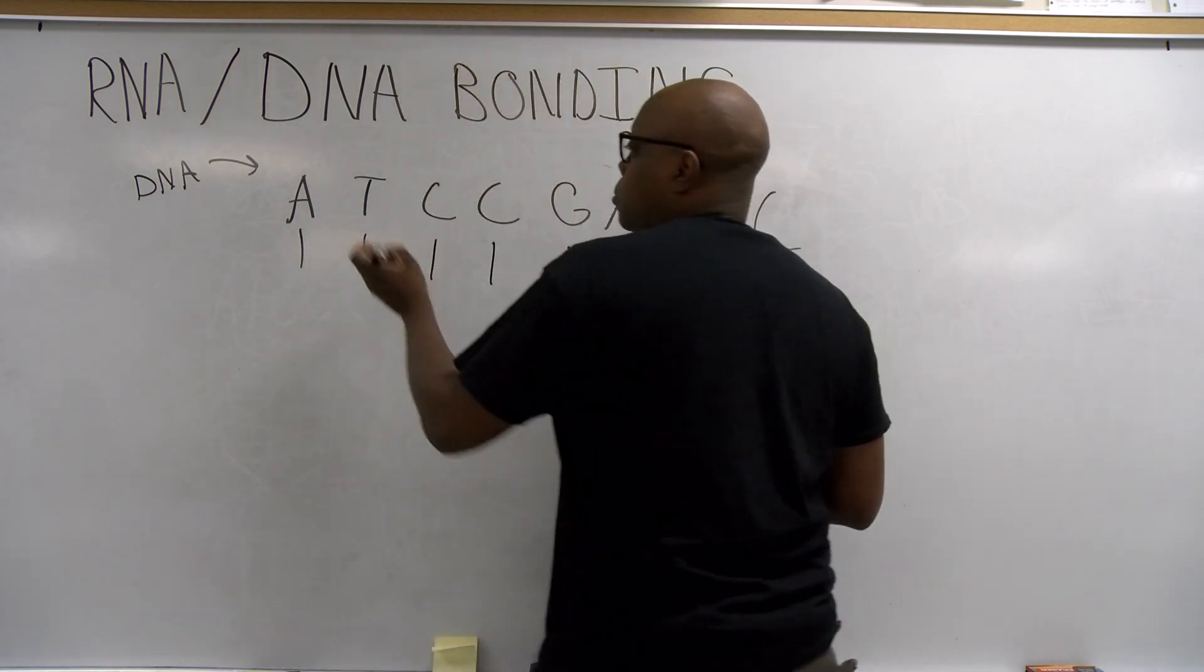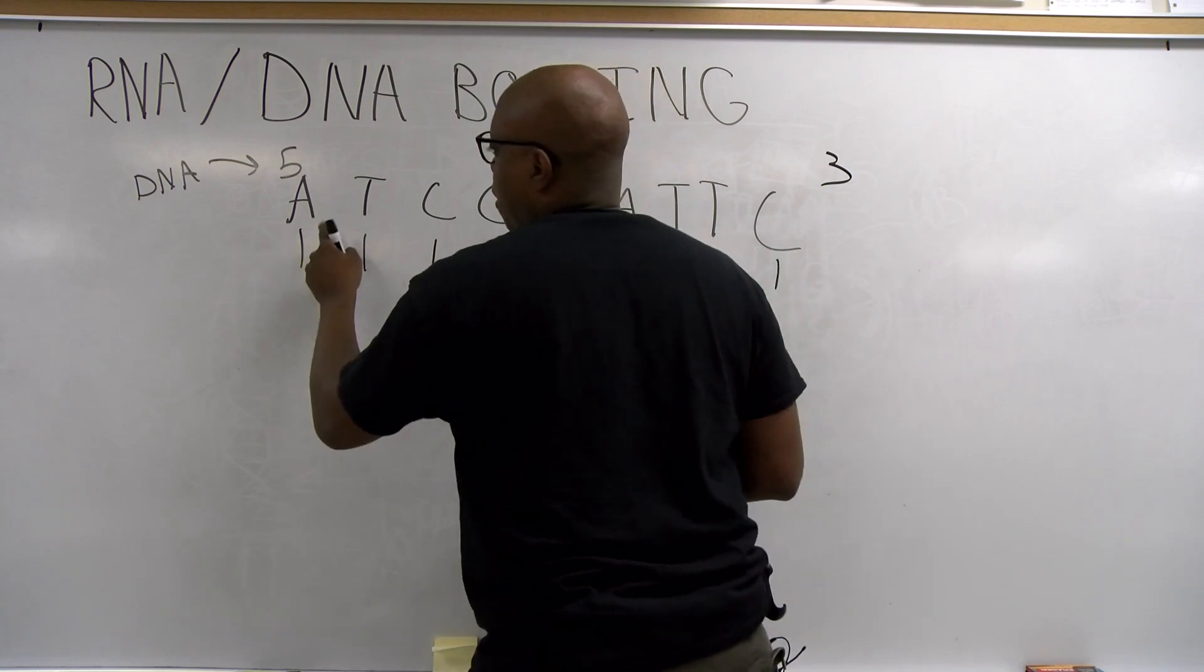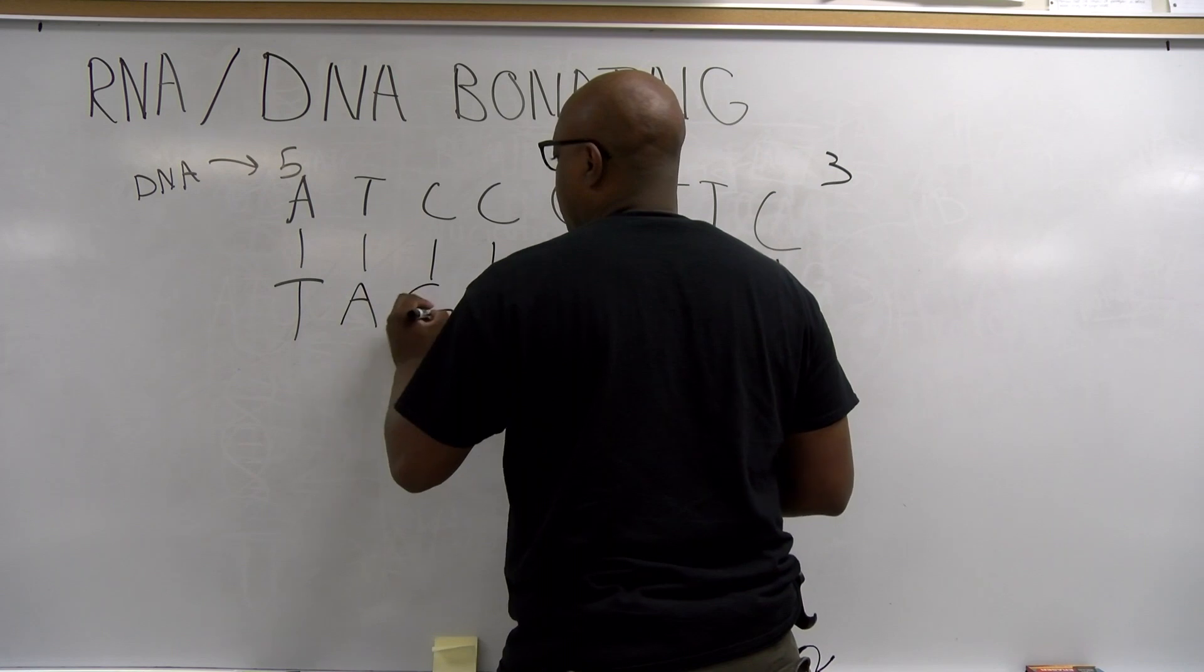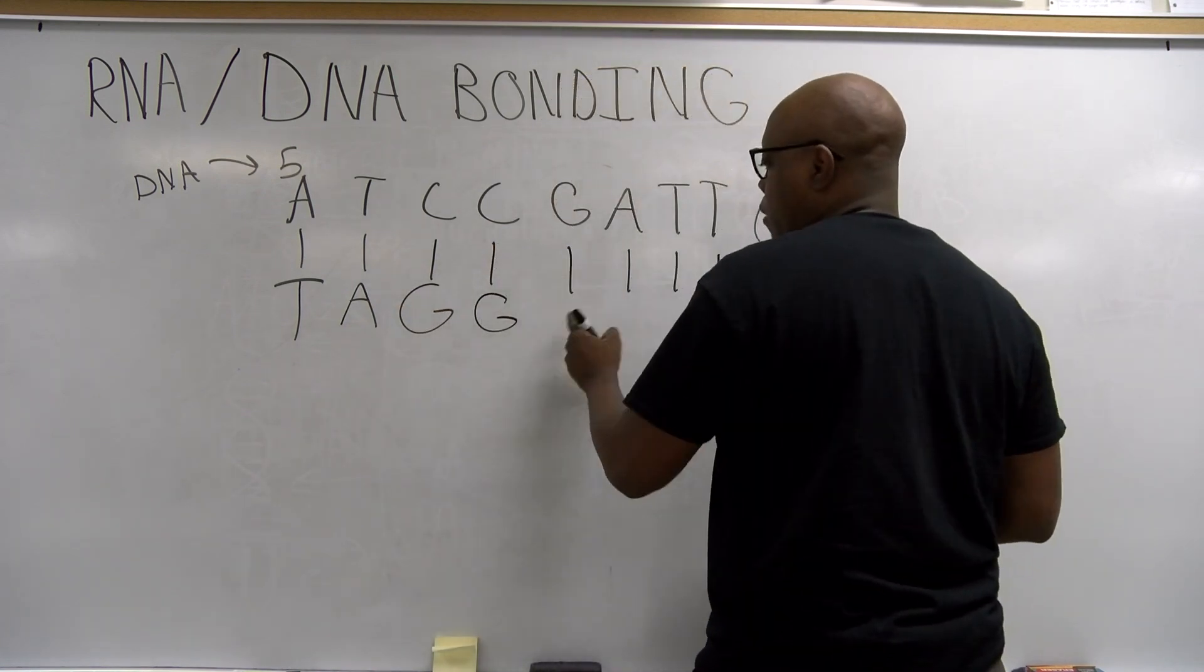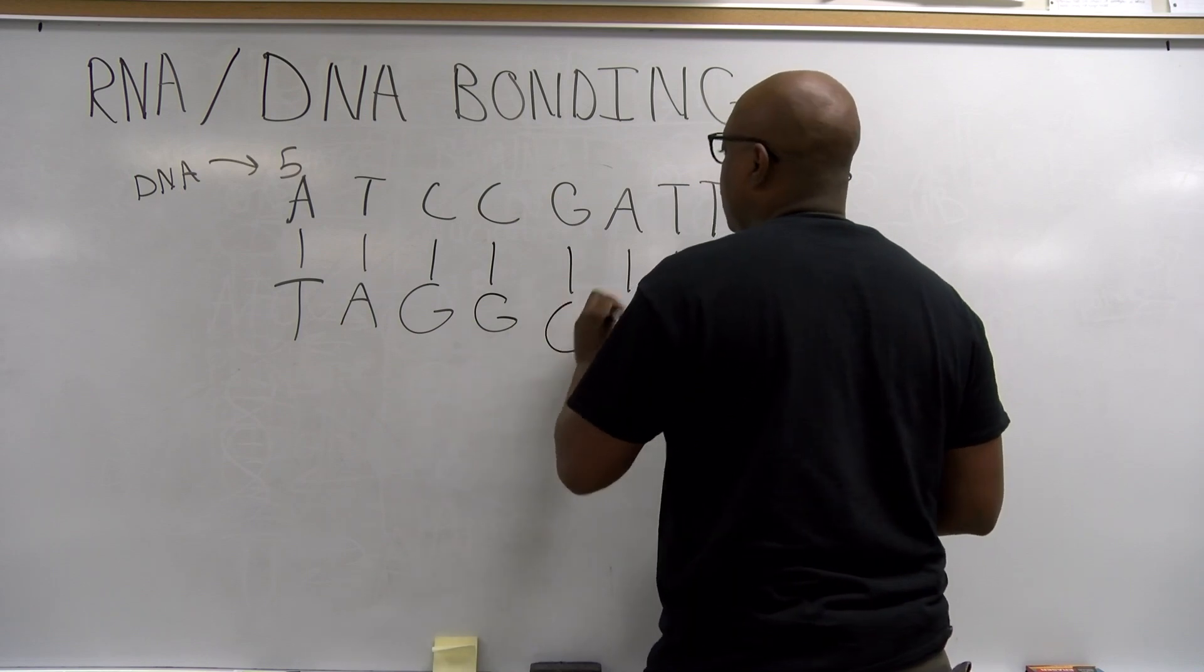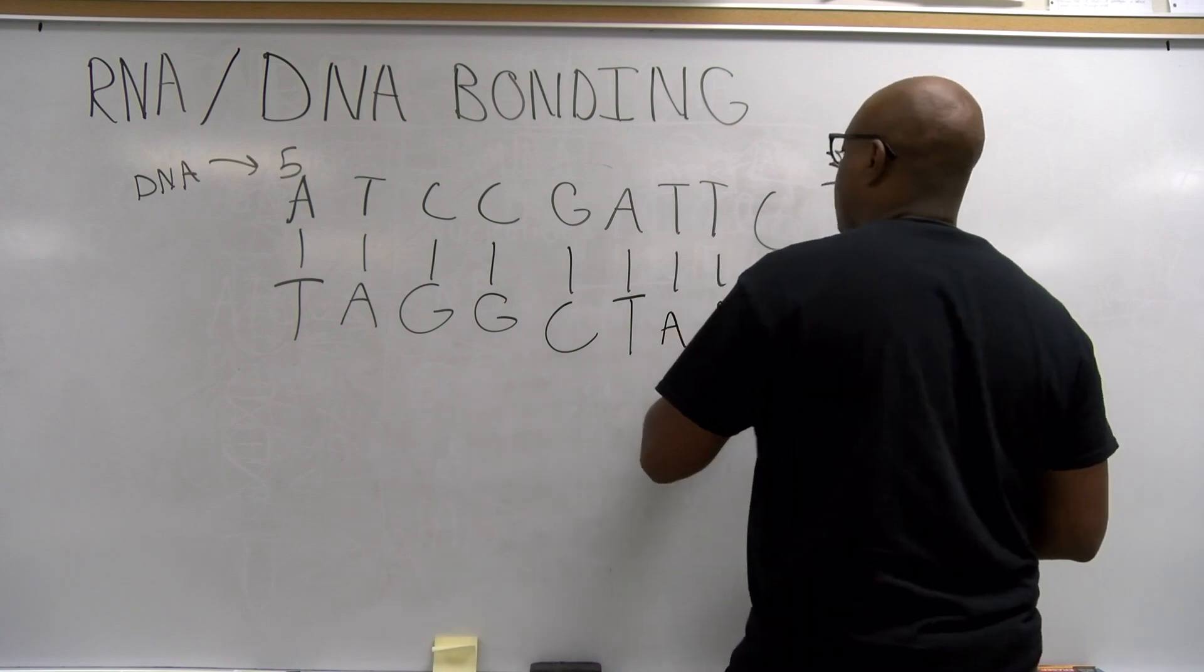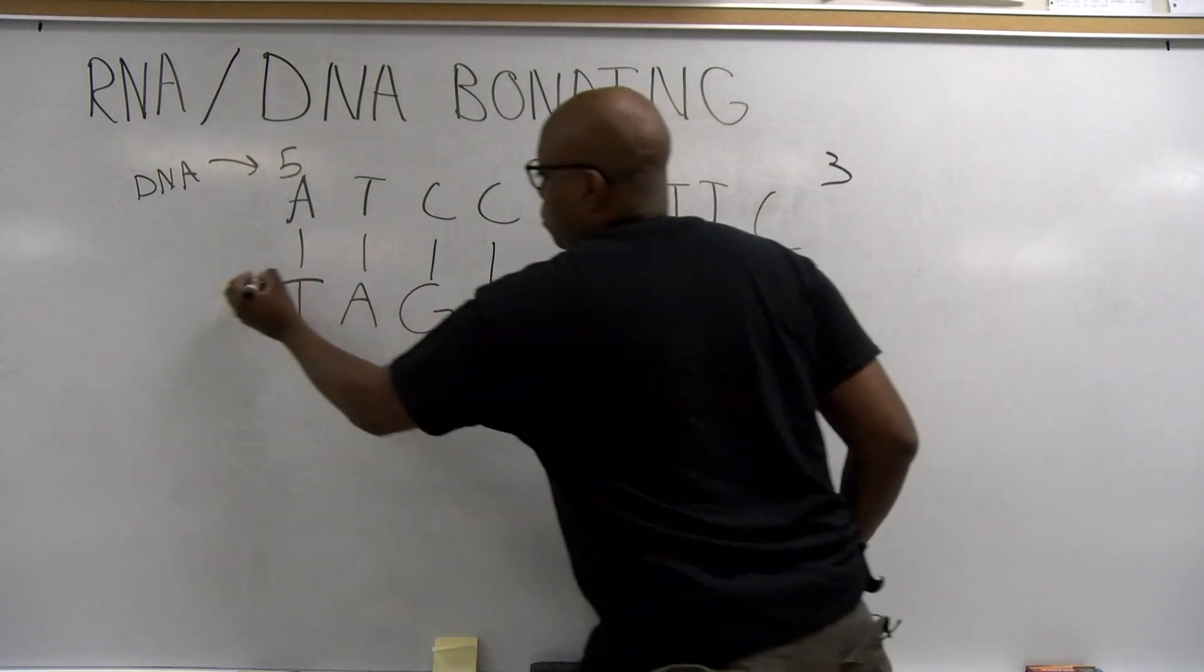Now, I told you that our numbers is 5 and 3. Now this bond, A bonds with T, T bonds with A, C with G, G again, then G bonds with C, then A bonds with T, T bonds with A, then A with this T, and then G, right? Let's go 3-5.